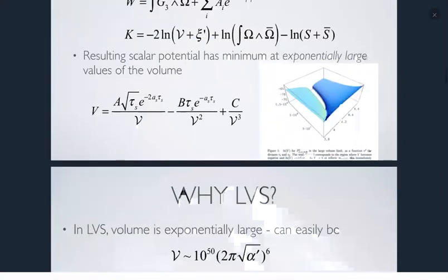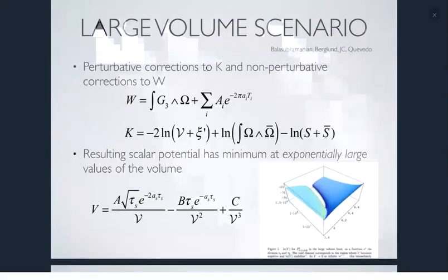By large volume, I mean the six-dimensional compactification space. Normally when people talk about it being large, they mean about 10 times the string scale. But here the volume can be 10¹⁵ or 10²⁰ in string units. This lowers the string scale from the Planck scale of 10¹⁸ GeV down to perhaps 10¹⁰ GeV, and also greatly lowers the scale of supersymmetry breaking. These are large Kaluza-Klein spaces relative to the string scale, though still extremely small relative to our scale.